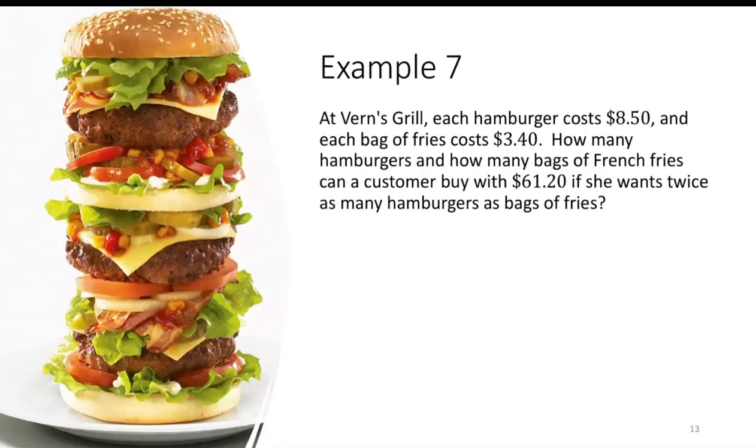For example, at Vern's Grill, each hamburger costs $8.50, and each bag of fries costs $3.40. How many hamburgers and how many bags of fries can a customer buy with $61.20 if she wants twice as many hamburgers as bags of fries?